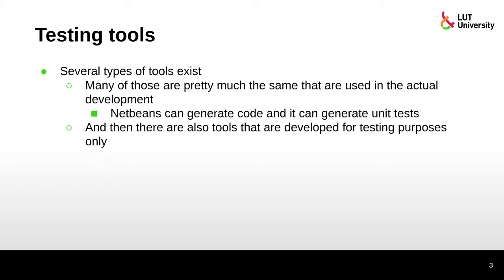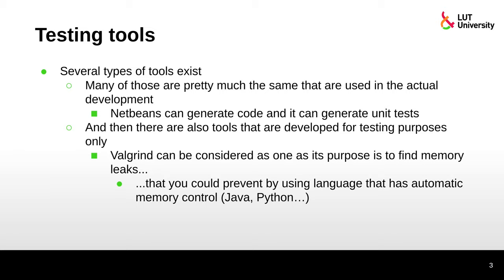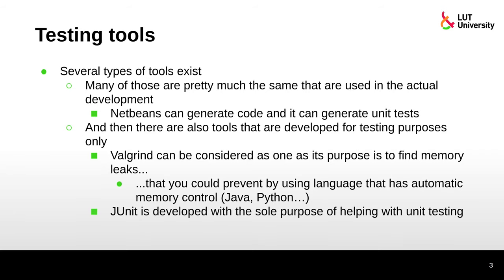There are also tools developed for testing purposes only. For example, if you are programming in C, you have probably encountered the Valgrind tool, which is used to find memory leaks. If the program is run with Valgrind, it reports how much memory the program has leaked, so you can debug and find those leaks. Of course, if you use a language with automatic memory management like Java or Python, you don't need to worry about that. We have also used JUnit, which is developed for testing purposes.